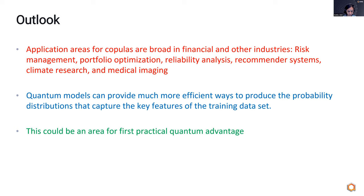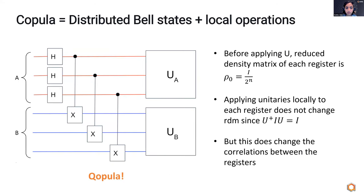Question: in the quantum circuit where you prepare the entire state and then have these unitaries on either side — why do you need unitaries on both sides? If you did one on one side, don't you get the transpose unitary on the other anyway? Answer: Yes, I think even if you had it on one side it would still work.